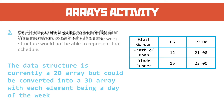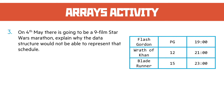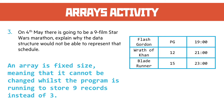On the 4th of May there's going to be a nine-film Star Wars marathon. Explain why the data structure would not be able to represent that schedule. You must think about the limitations of an array — a true array, not necessarily what you may have used in your programming, because modern programming languages, particularly Python, don't really have arrays. They have things called lists or more dynamic data structures. But a true array is fixed in size — this is a fixed size of three rows, so it can't be changed. We can't store nine films in those three rows unfortunately.